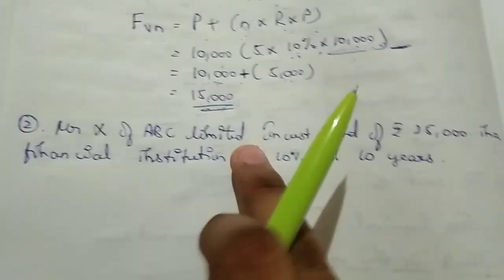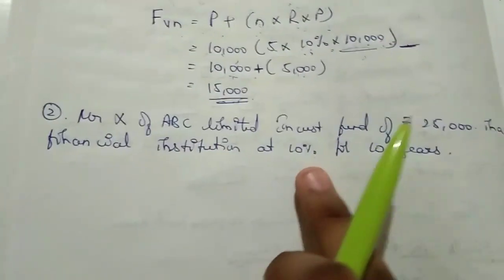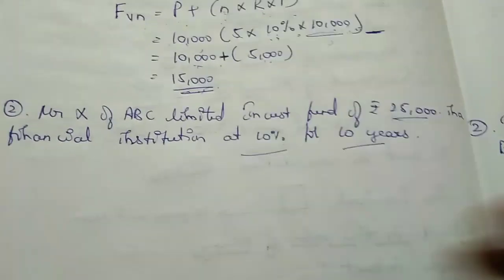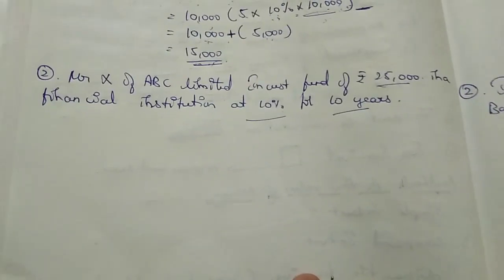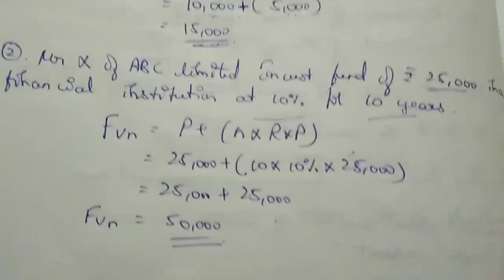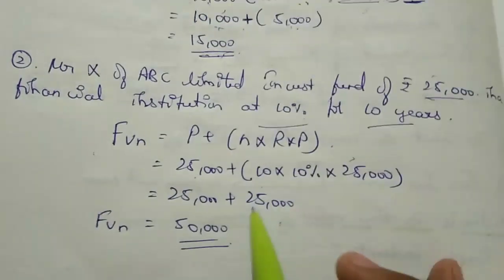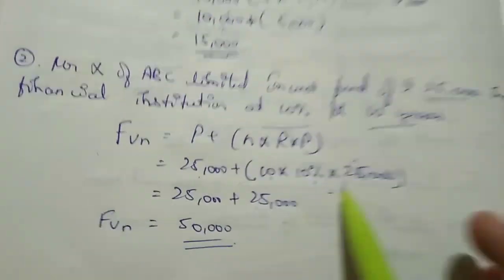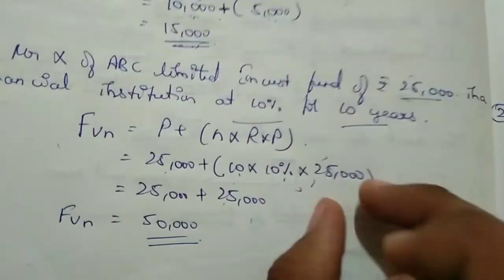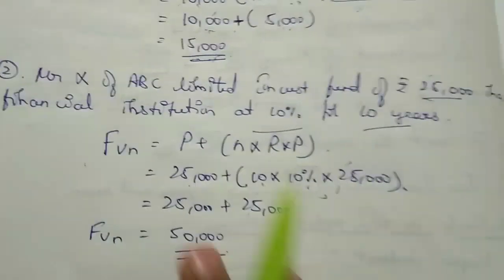Again we have the next question. Quickly we'll do it. Mr. X of ABC Limited invested fund of 25,000 in a financial institution at 10% for 10 years. Let's see how to do it. As you know the formula, substitute: 25,000, 10 years, 10% into 25,000. So what you will do - 25,000 into 10%, you will get 2,500. So 2,500 into 10 is 25,000. As it is 25,000 plus 25,000 is 50,000.